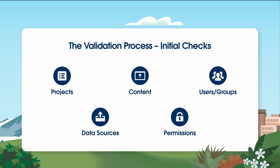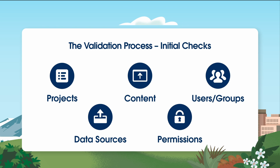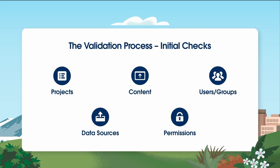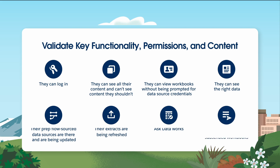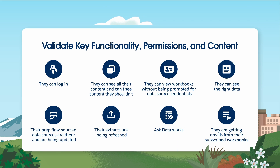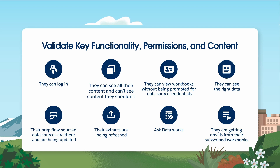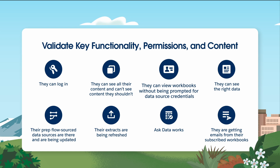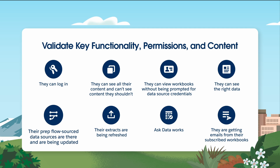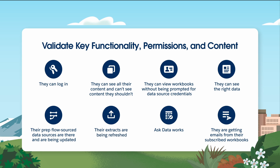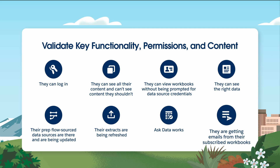Compare your server environment — projects, content, users, data sources, permissions — to your cloud site to ensure that things are in the right place. Do high-level permissions checks; perhaps log in with sample users and groups to ensure proper permissions. Share the load of testing with your user community — they'll feel engaged in the process and will bear some responsibility for validation. Have them check that they can log in, they can see all their content and can't see content they shouldn't, they can view workbooks without being prompted for data source credentials, they can see the right data, their prep flow sourced data sources are there and are being updated, their extracts are being refreshed, AskData works, and they are getting emails from their subscribed workbooks.